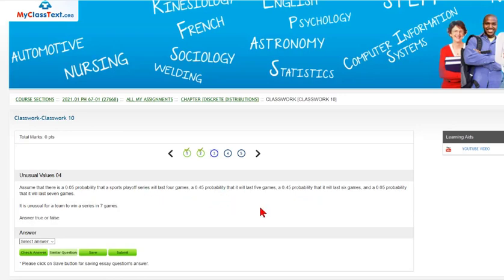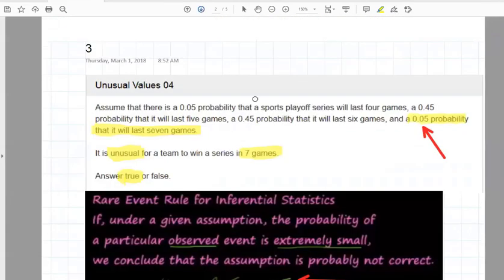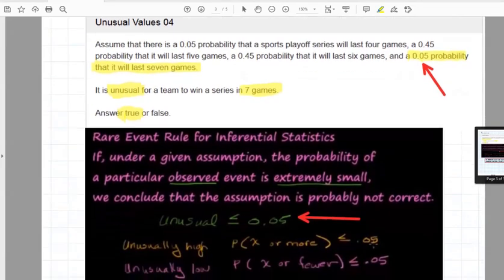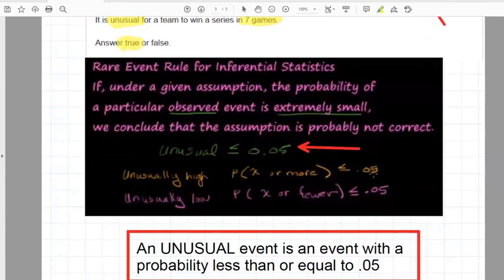So we are going to be looking for another definition of this idea of unusual. And that definition revolves around what's called the range rule of thumb, or the rare event rule. And the rare event rule, I've got it here in the PDF file.